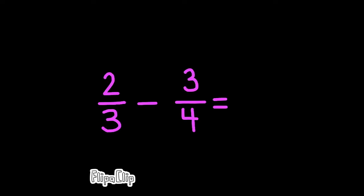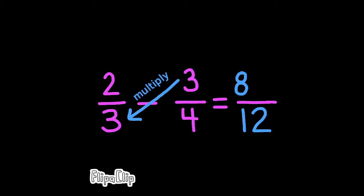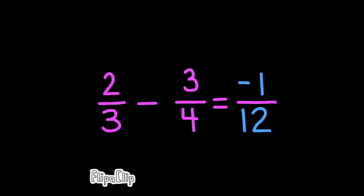Let's do another one: 2 thirds minus 3 fourths. Remember, the first step is multiply the denominators. Second step, multiply the left numerator by the right denominator. Third step, multiply the right numerator by the left denominator. In doing these three steps, 2 thirds minus 3 fourths becomes 8 minus 9 over 12, which represents 8 twelfths minus 9 twelfths. 8 twelfths minus 9 twelfths is negative 1 twelfth.